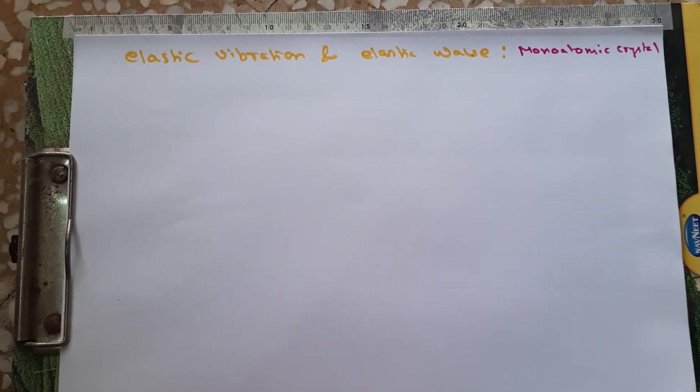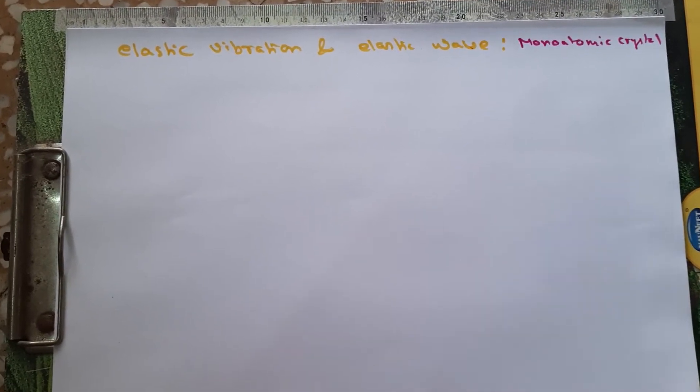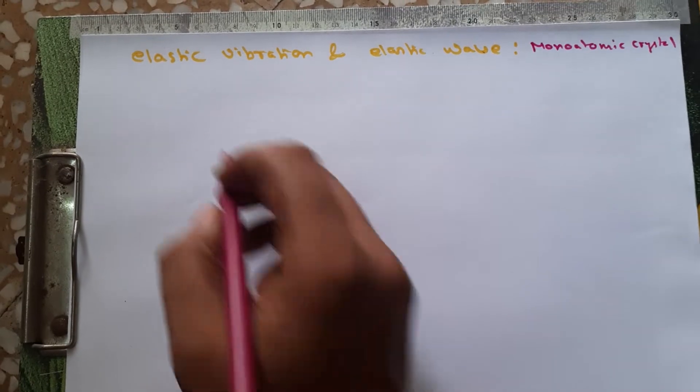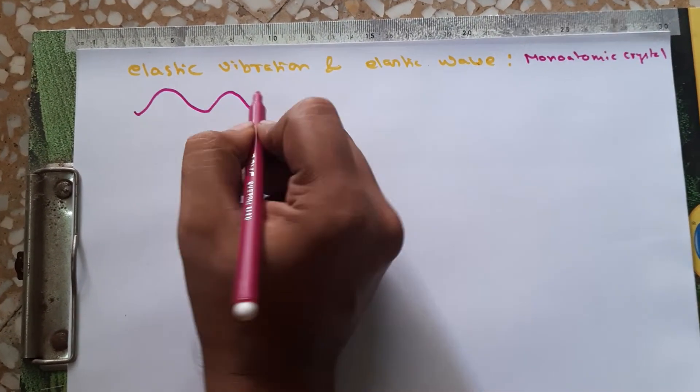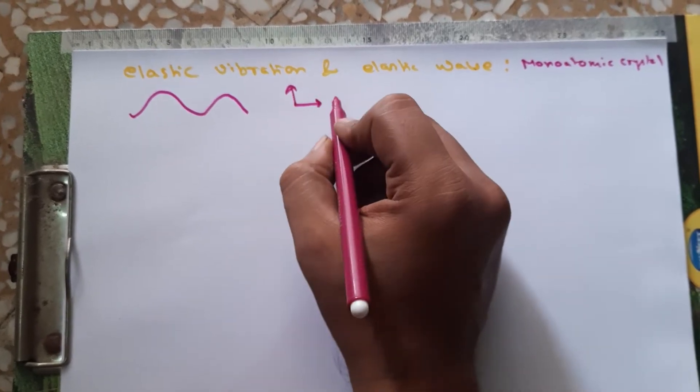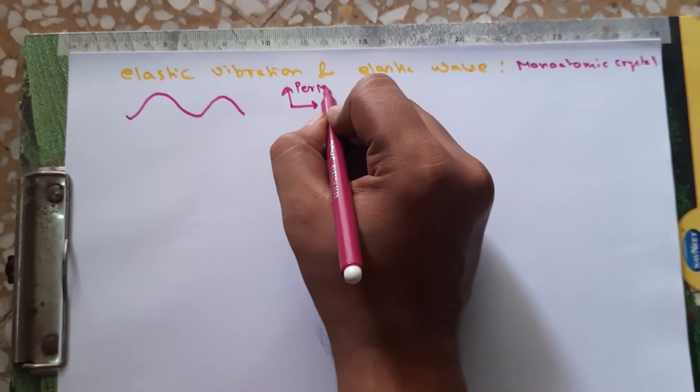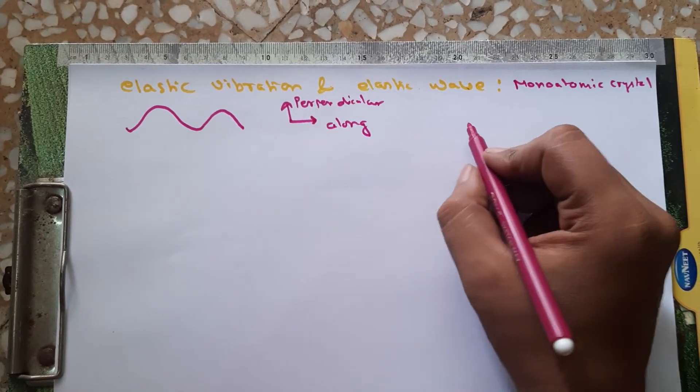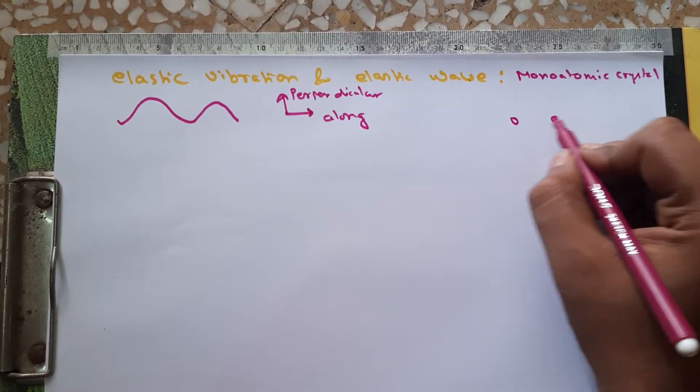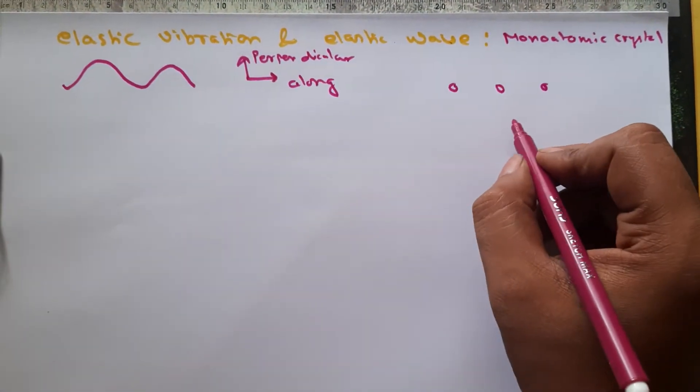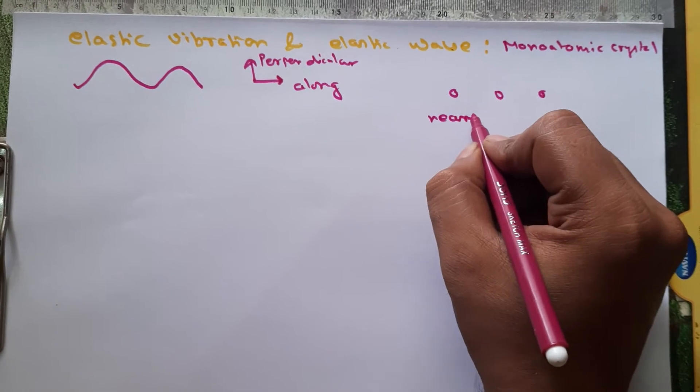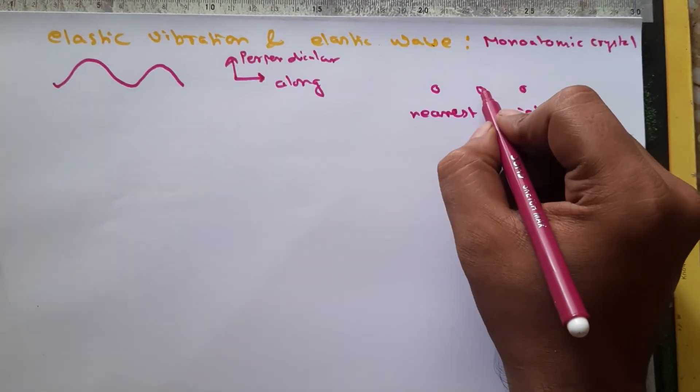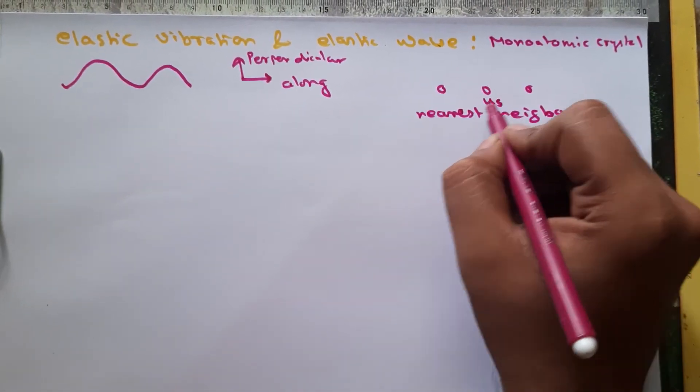And generally the atoms or the planes of the atoms move along the elastic wave or perpendicular to it. So it can either move in this direction or in this direction - this is the perpendicular, this is the along. So suppose there are some atoms here, and in this case we will take only nearest neighbors.